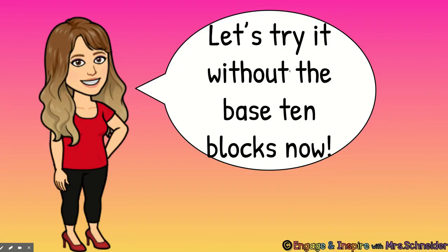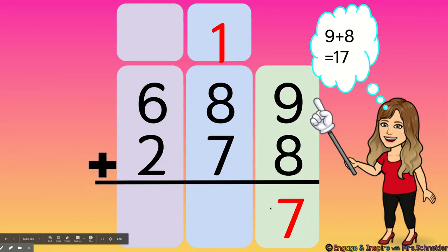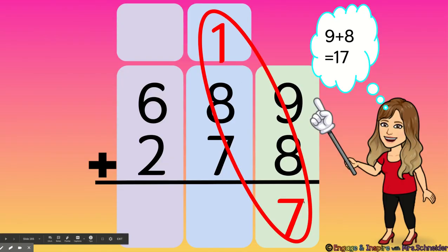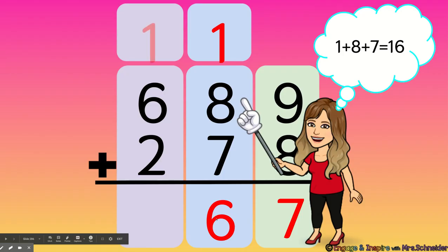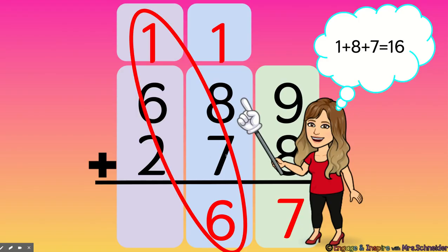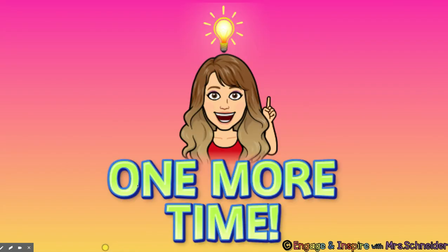Let's try it without the base-10 blocks. We're going to start on the right in the ones place. The problem we're solving is 689 plus 278. Nine plus eight is 17, so we're going to leave the seven down here and carry the one — because nine plus eight is not seven, it's 17. If you imagine a diagonal circle, it will help you remember that it's 17. Then we add our tens: one 10 plus eight tens plus seven tens equals 16 tens — not six tens, 16 tens. So we carry one 100 up here. Now we add our hundreds: 100 plus 600 plus two hundreds equals nine hundreds.